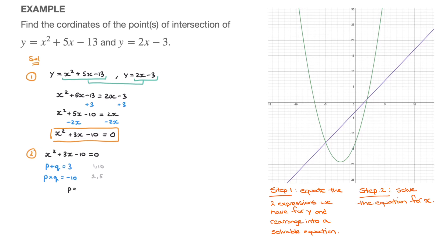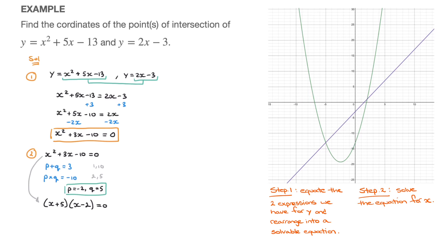We can say p equals negative 2 and q equals 5. Now that we've found these two numbers, we can factor the quadratic. It becomes: x plus 5 times x minus 2 equals 0 — the plus 5 comes from the 5, and the minus 2 from the negative 2. I could also have written x minus 2 times x plus 5; it makes no difference.